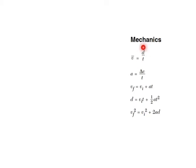So D is distance, T is time. This is V with a bar over it — that means average velocity. Here's acceleration. Delta V means change in velocity. VF is final velocity, VI is initial velocity. And the formulas also include acceleration, time, distance, and time squared. So really we only have four variables.